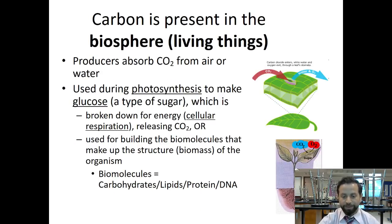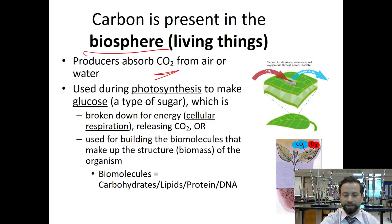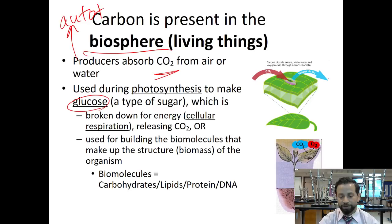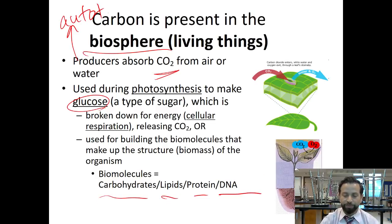Continuing to talk about where we can find carbon — it is found in all living things, the biosphere. Producers, also called autotrophs, absorb CO2 and do photosynthesis. In photosynthesis, the idea is to make glucose, which is a type of sugar. That glucose is used for building the blocks for different biomolecules: carbohydrates, lipids, proteins, and DNA.